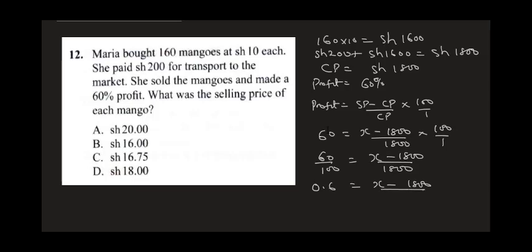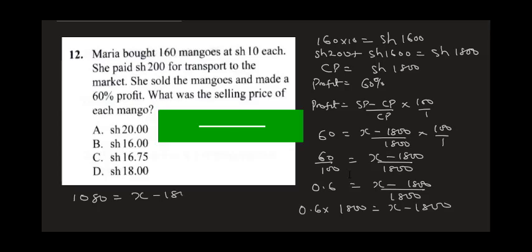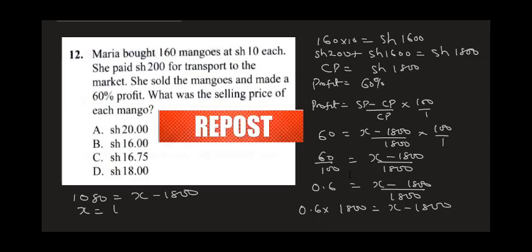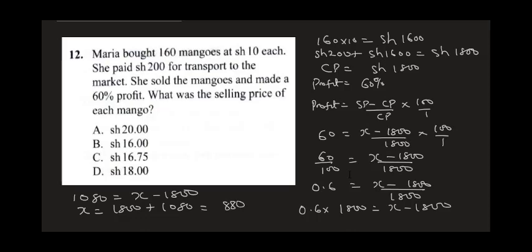Cross-multiplying: 0.6 times 1800 equals x minus 1800. So 1080 = x − 1800. Collecting like terms: x = 1800 + 1080, which gives x = 2880 shillings. That is the total selling price for all 160 mangoes.